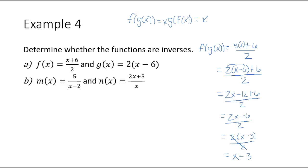So f of g of x is equal to x minus 3. There is no point in doing the substitution of f of x into g of x, because this function composition did not simplify into x with everything else canceled out. So that means for part a, these two are not inverses.